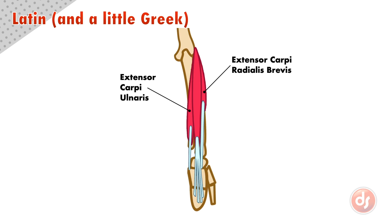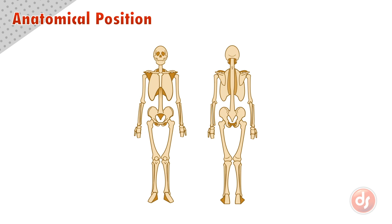As we continue our journey through anatomy, we will learn more of these terms to help us understand the muscles we draw. We also need to understand the anatomical position, which is the standard position the body is in, so we have a consistent way to talk about the direction of our anatomy. The anatomical position is the figure standing upright, arms straight, palms and feet facing forward.